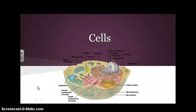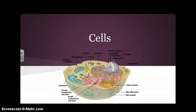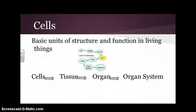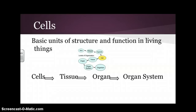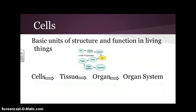In today's presentation, we're going to take a brief look at the different components that make up cells. Cells are the basic units of structure and function in all living things. The organization goes: cells build together to create tissue, tissues build together to create organs, organs build together to create organ systems, and organ systems are combined together to make an organism or a body.